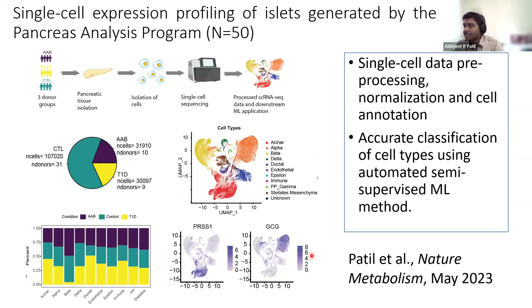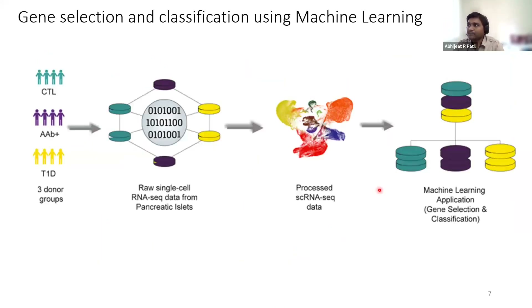This study was published in Nature Metabolism last year and represents the largest available single cell transcriptomic dataset in the field as of today. Given this large dataset, we wanted to explore if we could use machine learning to identify significant genes and classify these donor groups: type 1 diabetic, autoantibody positive, and control.